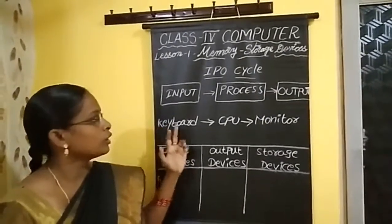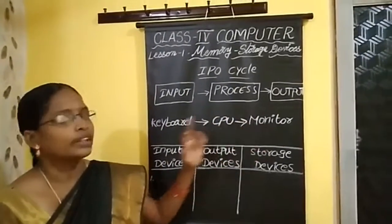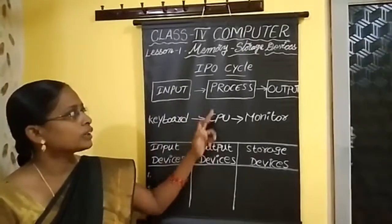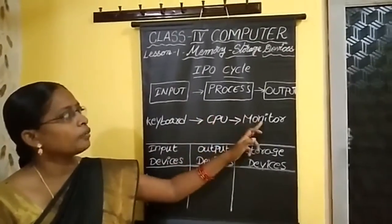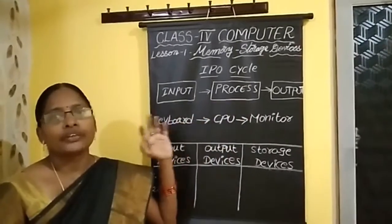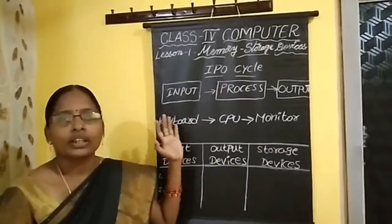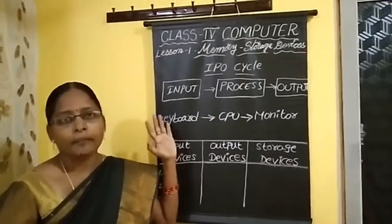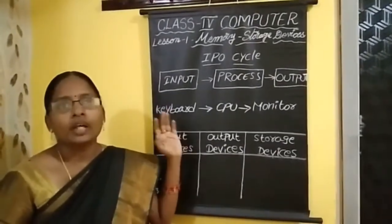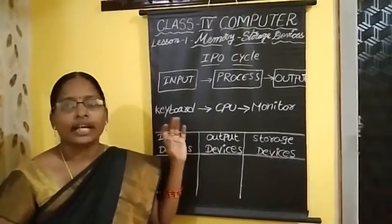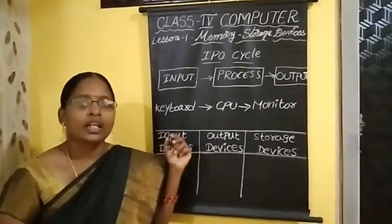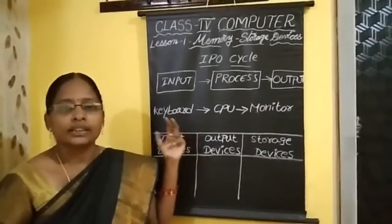See here — keyboard, CPU, monitor. Keyboard is the input device, CPU is the processing device, and monitor is the output device. Some input devices are keyboard, mouse, and joystick. Some output devices are monitor, speakers, and printers.